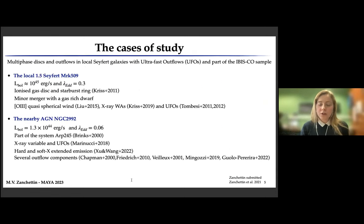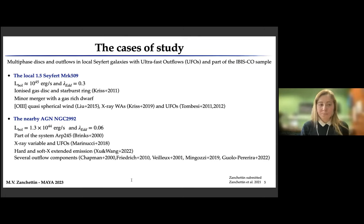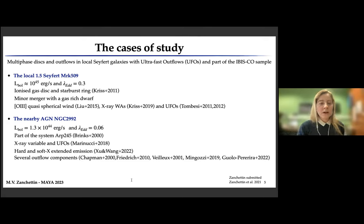In this presentation, I will show results about two peculiar objects drawn from the IBISCO sample, which have components in the ultra-fast outflows detected in the nuclear part of the galaxy. The first object is the local 1.5 Seyfert Markarian 509. This Seyfert shows the presence of an ionized gas disk and a starburst ring, seems to be in merger with a gas-rich dwarf, and different studies highlight the presence of several ultra-fast components — from the ionized gas wind detected through O III emission to the X-ray warm absorbers and UFO components.